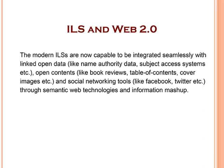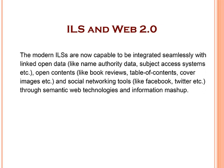Modern library automation systems are now capable of being integrated seamlessly with linked open data. The Library of Congress developed a huge set of subject authority data through LCSH. OCLC developed a linked open dataset called VIAF, which is an agglomeration of 25 national library name authority datasets. Table of contents, cover page datasets — all can be directly linked with your library automation system without entering a single character. Without spending any time, energy, or labour, you can link a huge number of datasets with your local catalogue through Web 2.0 technology, and library automation is moving towards this path.